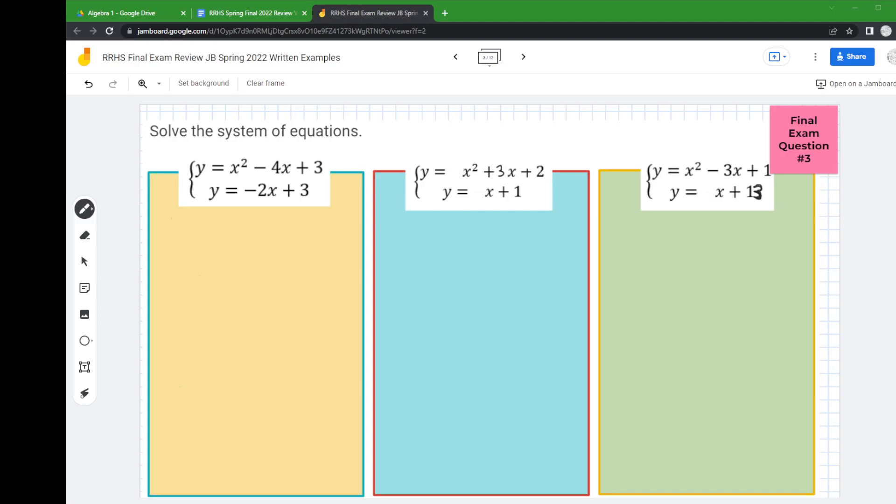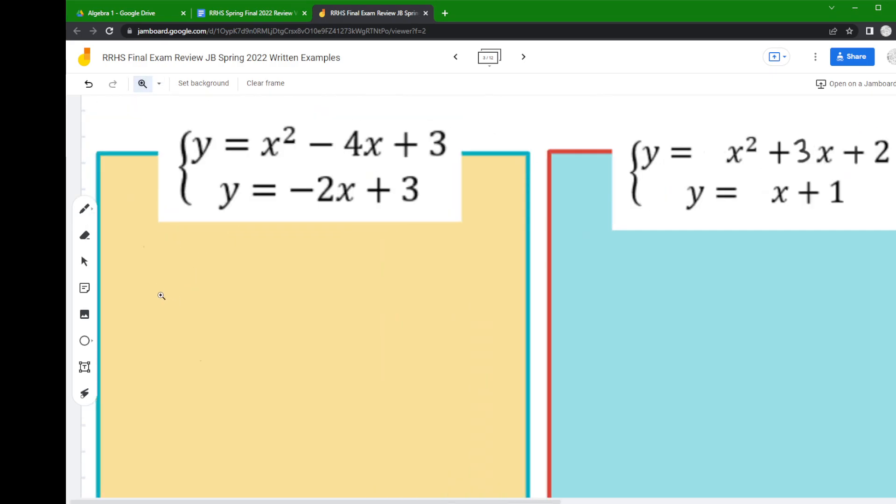In this example we're asked to solve a system of equations. Now this is a quadratic and linear system, so the best way I find it to solve it is using elimination. Elimination is when you add or subtract the two equations to eliminate a variable.